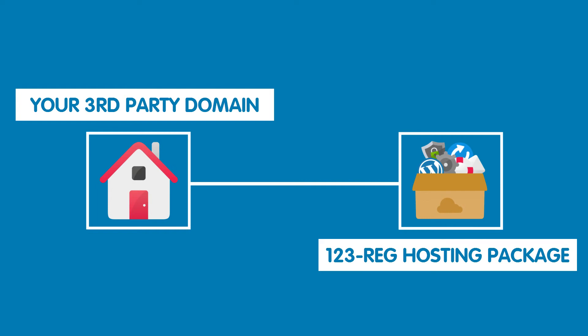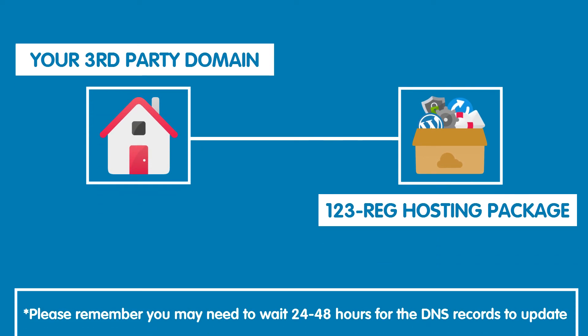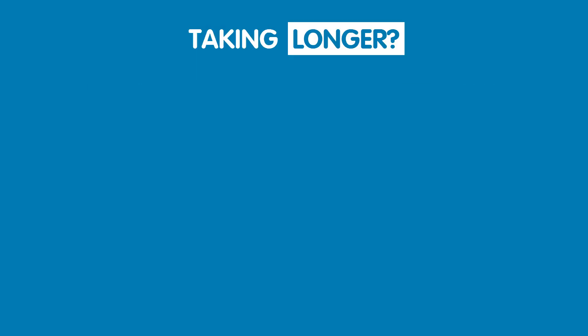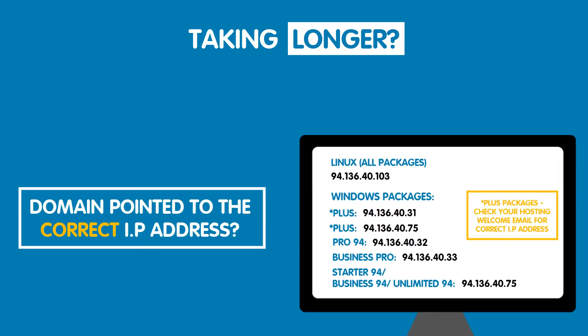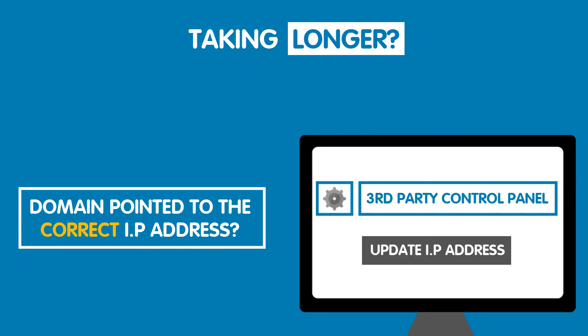If you find that it is not working, please remember you may need to wait 24 to 48 hours for the DNS records to update. If it seems to be taking longer, make sure that you have pointed your domain to the correct IP address for your 123REG hosting package as shown earlier. You can update this in your control panel on your third-party provider's website, or get in contact with them if you are unable to do this.